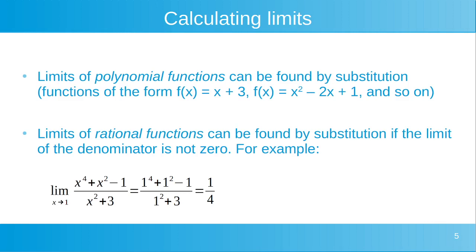The limits of polynomial functions can be found by substitution, with polynomial functions being of the form f of x equals x plus 3, or f of x equals x squared minus 2x plus 1, and functions with x raised to other powers. Limits of rational functions can be found by substitution if the limit of the denominator is not 0. For example, for the function x to the power of 4 plus x squared minus 1 all over x squared plus 3, evaluating as x approaches 1, we substitute x equals 1, the denominator is not 0, and we get 1 quarter.